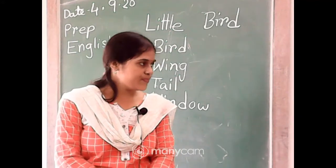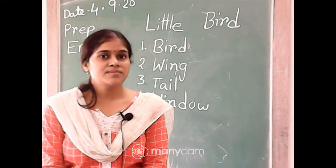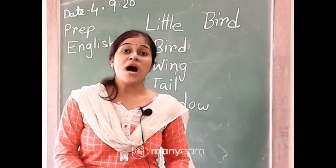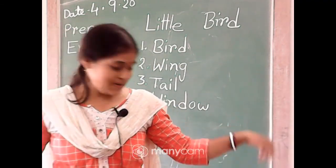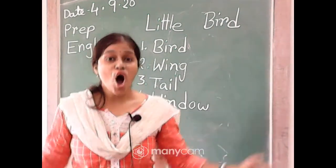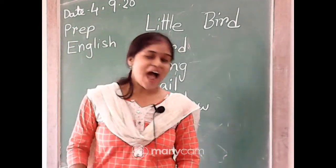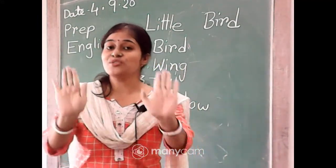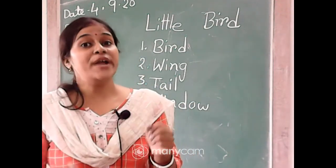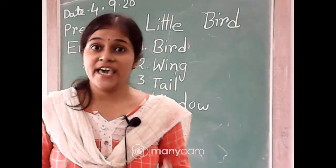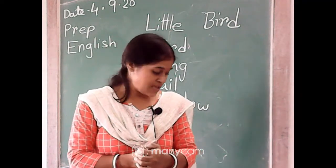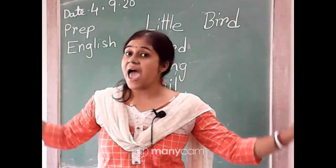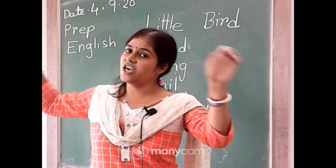Okay, now let's read the rhyme again. Once I saw a little bird come hop, hop, hop. I cried, little bird, will you stop, stop, stop. I was going to the window to say, how do you do? But he shook his tail, shook his tail, and away he flew.